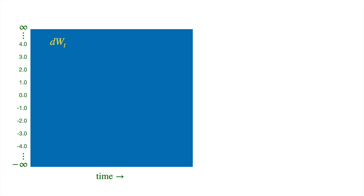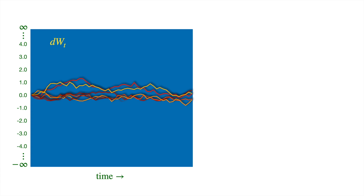Let's see a few simple paths. The process starts at zero, and then goes up and down. It's a stochastic process, so the path will take a different shape on each realization.